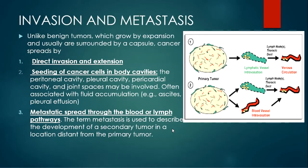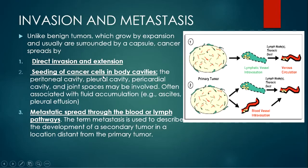Coming to the first topic: invasion and metastasis. This is a property of cancers. Unlike benign tumors, which are more localized and surrounded by a capsule, cancers can invade and extend into surrounding tissues. This occurs by direct invasion and extension. They can also have seeding of cancer cells into body cavities such as the peritoneal cavity, the pleural cavity, and the pericardial cavity, and joint spaces may also be involved. This seeding can be associated with fluid accumulation in these cavities.